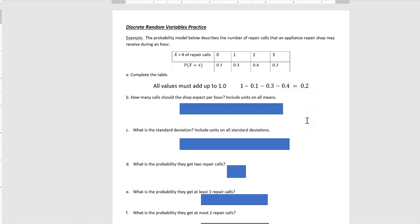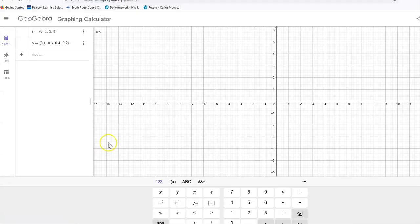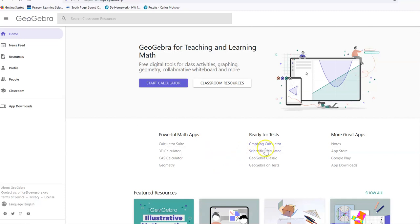In the second part, they ask how many calls should this shop expect per hour, and it says include units on all means. So an expectation or expected value is just a weighted mean. And to do weighted means, we're going to use GeoGebra, and I'll show you again how to use that. Go to GeoGebra, if you go to the main page and click on